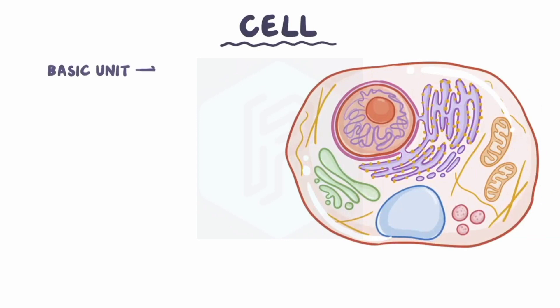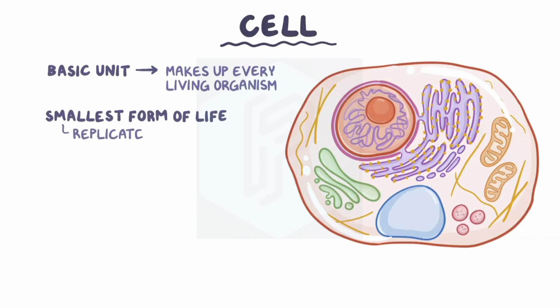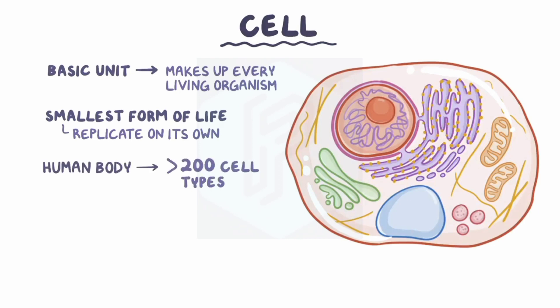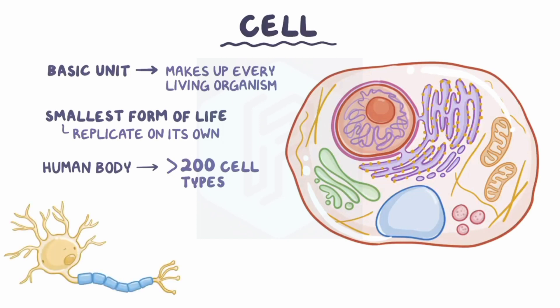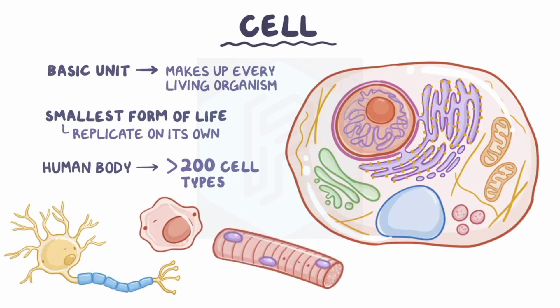The cell is the basic unit that makes up every living organism. It's the smallest form of life that can replicate on its own. But cells in our body differ quite a bit from each other. The human body alone has over 200 distinct cell types, from long skinny neurons that can go over 1 meter long, to macrophages that gobble up pathogens, to myocytes that contract to let you flex your muscles. But despite their differences, they do share a lot of similar features.